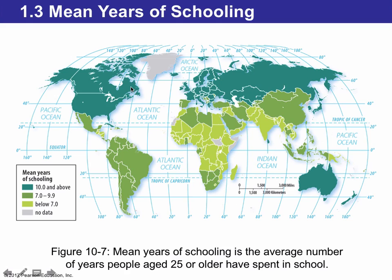Looking at mean years of schooling, the same pattern appears: the more people go to school, the more developed they tend to be. The United States and Canada have mean years of schooling of 10 and above. In contrast, places like Central America have mean years of schooling below 7, meaning people there tend to go to school only through about the 7th or 8th grade on average.